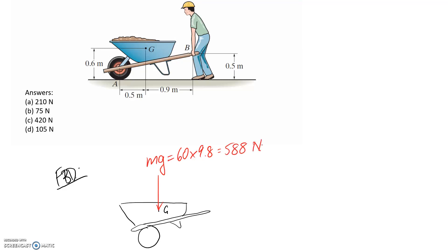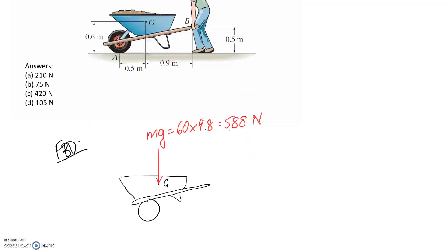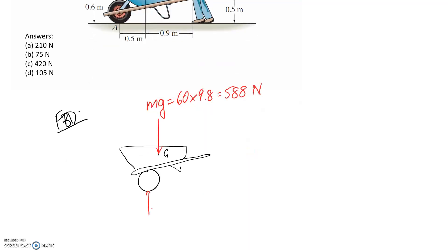All right, so the other forces that we're going to have, one is that we know that this wheel is in contact with the ground and this is like a roller support. So that means that there's going to be a vertical reaction perpendicular to the contacting surface which is the ground. So if the ground is horizontal, the force should be vertical. So let's call this Ay.